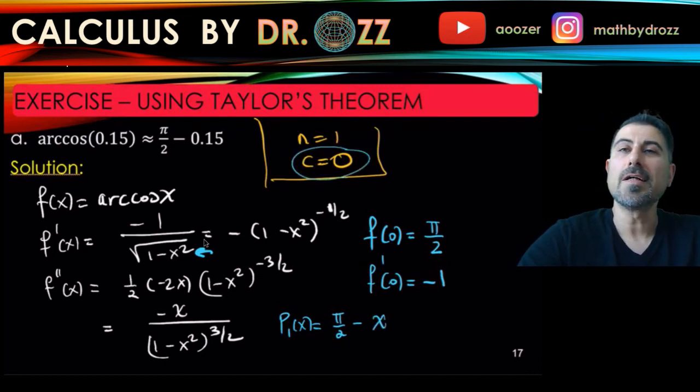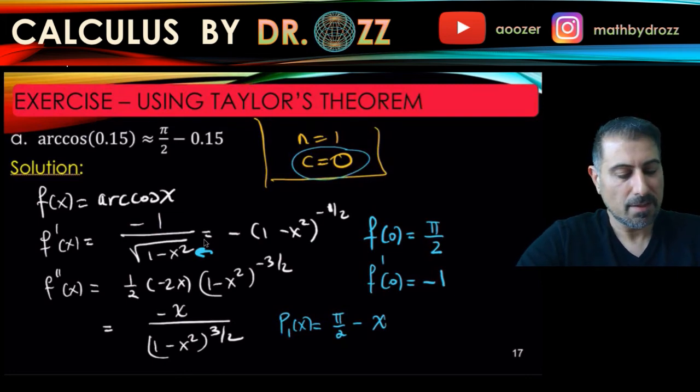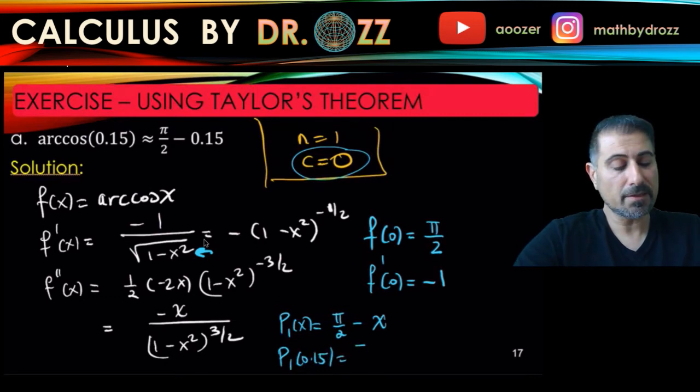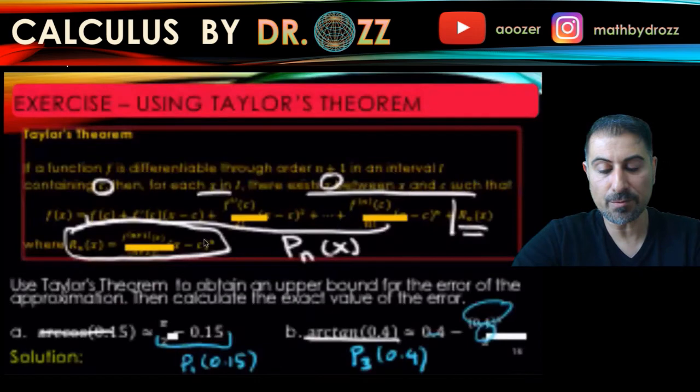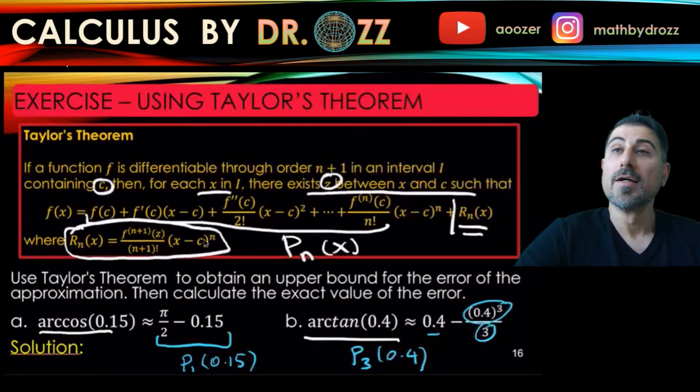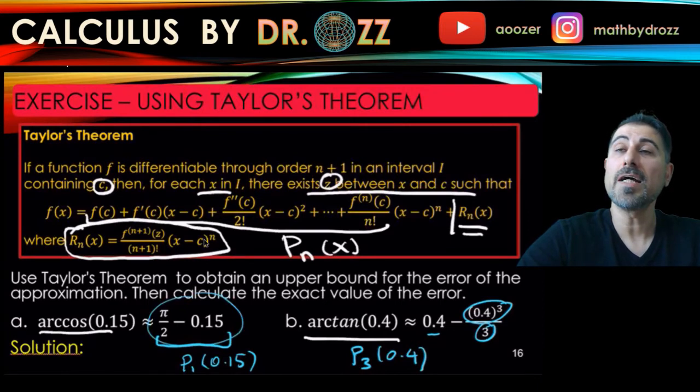So let's write P_1(x) here. P_1(x) is f(0) plus f prime of 0, which is minus 1, times x minus 0. So that's just pi over 2 minus x. So now look, P_1 at 0.15 is something really easy to calculate: pi over 2 minus 0.15. There we go. That's in fact what's given in the question statement here.